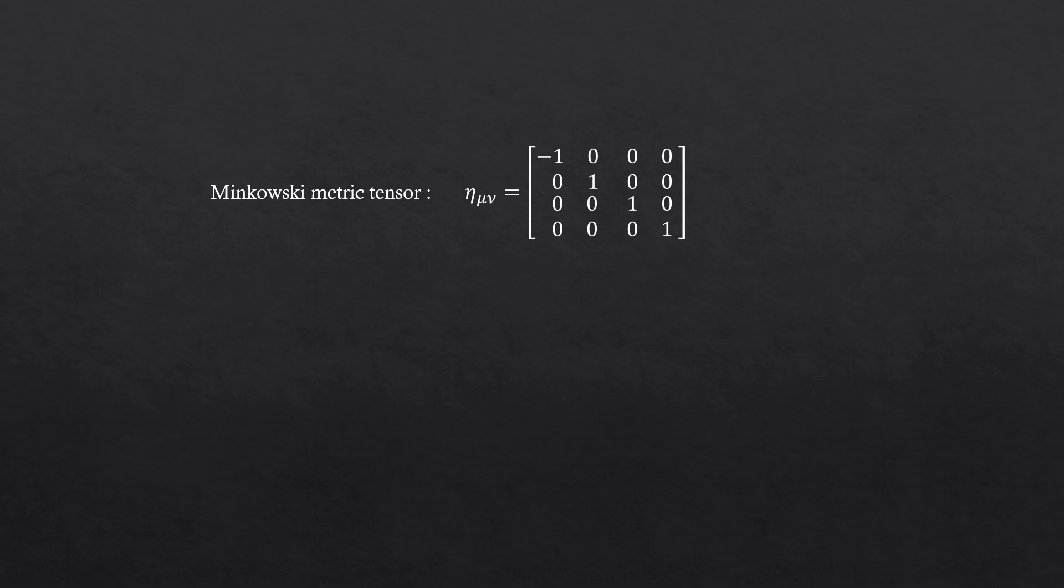And these indices could be alpha, beta, or rho, sigma, or gamma, delta. It doesn't matter. Those are dummy indices. You just choose the alphabets on your own. As long as you keep other tensors consistent with each other, then it's fine.